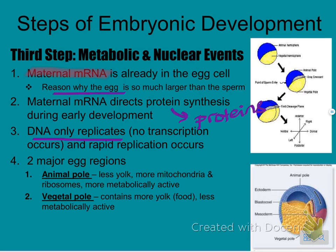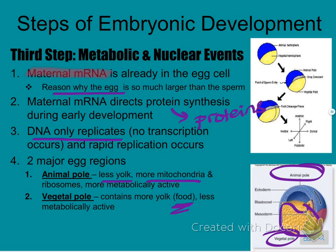There are two major regions of the egg. The animal pole has less yolk, more mitochondria and ribosomes — it's more active. Looking at the diagram, this is the blue part of the cell. The vegetal pole has all the yolk, which is food for the growing embryo, and it's less active — it looks a little more blobby.